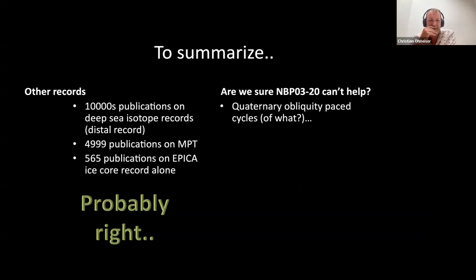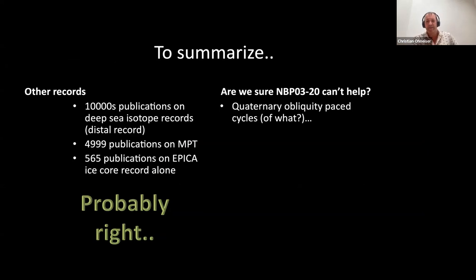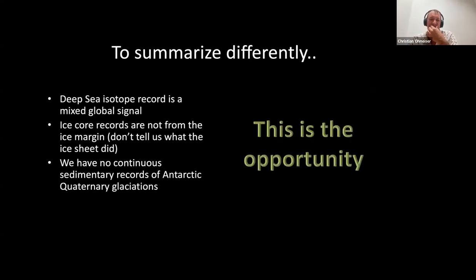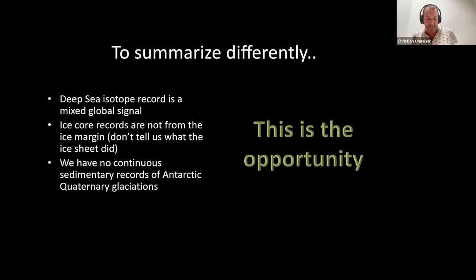To summarize: there are tens of thousands of publications on deep-sea oxygen isotope records — these are distal mixed global signals. There are 565 publications from ice core records, and there's this NBP03 record which looks like it might have higher-frequency cycles inside it. Deep-sea isotope records are a mixed global signal; ice core records don't tell us what the ice margin did. We actually don't have a good continuous sedimentary record of Antarctic quaternary glaciation. That's the opportunity for this record, and it required acknowledging what we don't know.